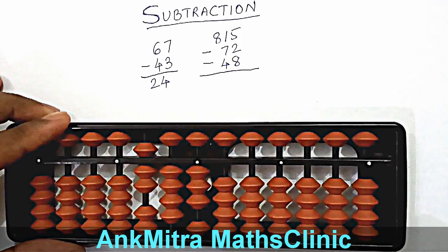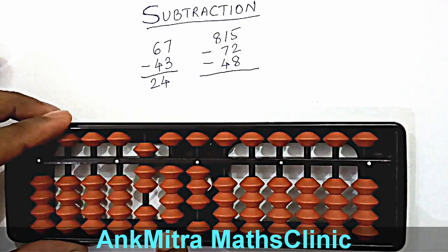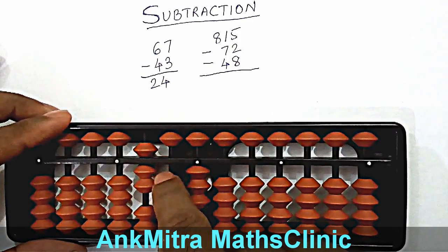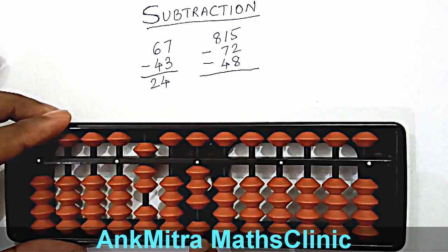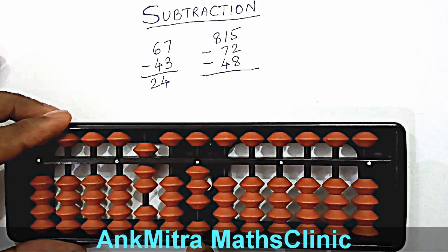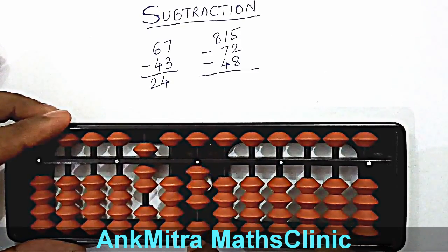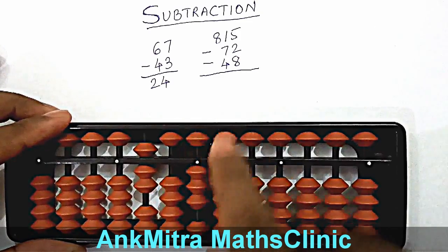Now coming to minus 48. So first we'll come to the tens place. Subtracting 40 is easy — we have 4 beads available here, so we'll directly subtract 40. Now coming to units place, we are supposed to subtract 8. We don't have 8 beads available here, but we can use the big friend formula. Big friend of 8 is 2. So we are supposed to add 2 and subtract 10 to finish the subtraction of 48.